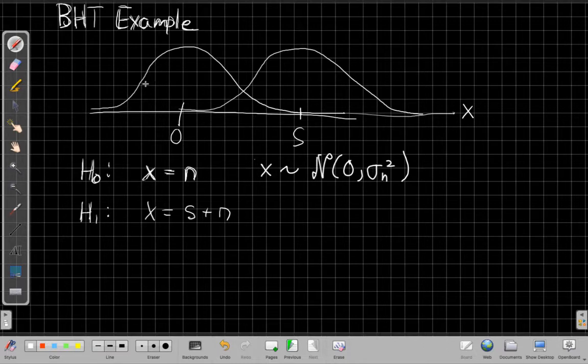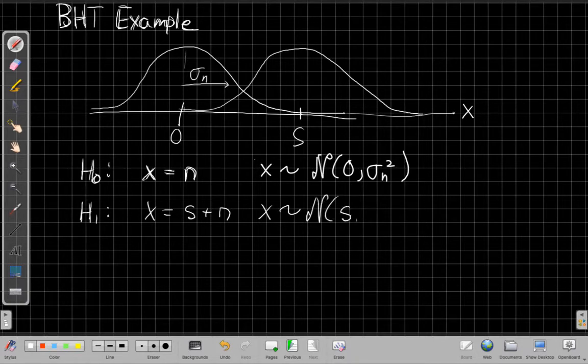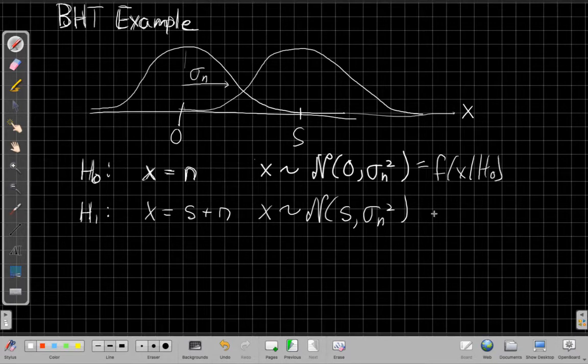So that says that the width of this peak is proportional to the standard deviation, sigma n, the width on either side around the mean. And then if s is some known deterministic thing, adding it to n just shifts the mean. So in the second case, we'd say my alternate hypothesis, this is my f of x given H0 from the previous video, and this would be my f of x given H1.